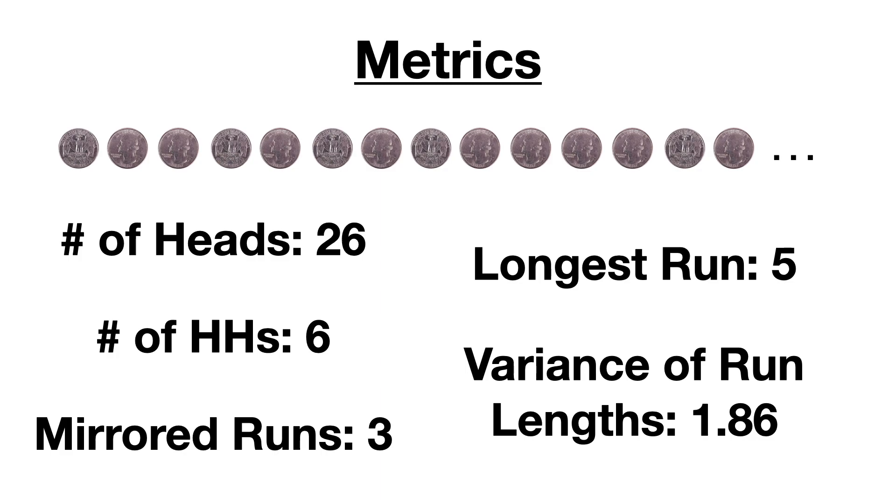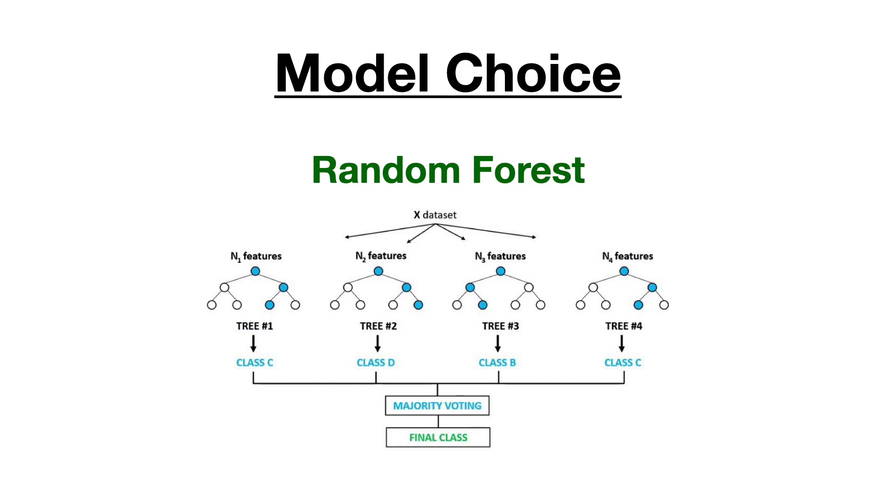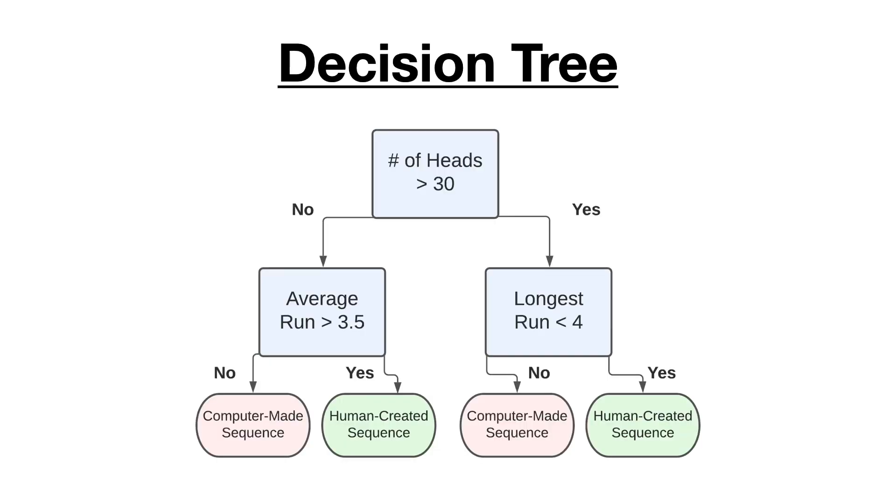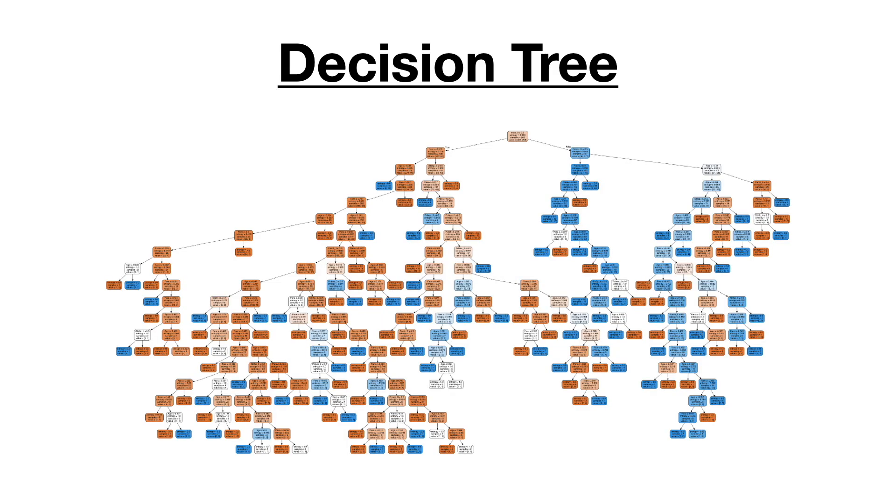So now that we've created all the metrics, we have to decide on the model we're going to use to predict if a sequence is actually random or if it was created by a human. I decided to go with what's known as a random forest model, which is a collection of decision trees. Each decision tree is a flowchart of rules that attempts to classify the sequence as truly random or human generated based on the set of data that's shown to the model. For example, a decision tree can look at a sequence of flips and decide that if there are more than 30 heads and the longest run is less than 4, it'll predict that the sequence was created by a human, since that's what it saw in the data that it was trained on. Now in reality, the decision trees are much more complex than this, with many more branches, but this is the general idea of how they work.